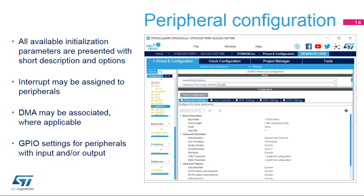When configuring a peripheral, the dialog window shows basic parameters, dependencies, and constraints. Simple drop-down menus are used when applicable. Interrupt priorities can only be set in the NVIC settings tab. The peripheral window can only be used to enable or disable each interrupt.